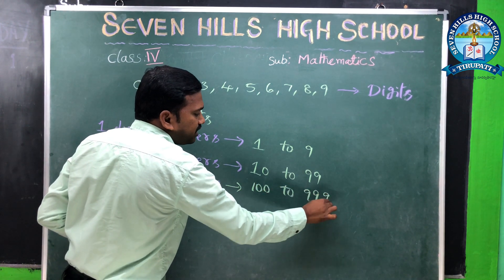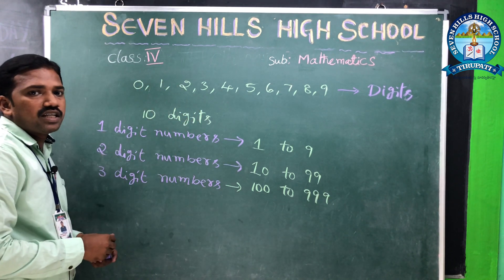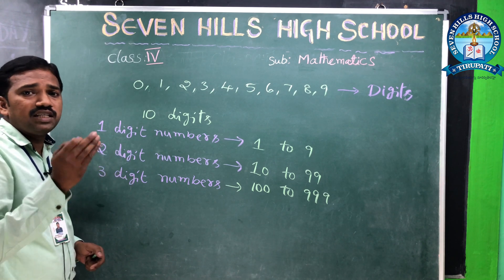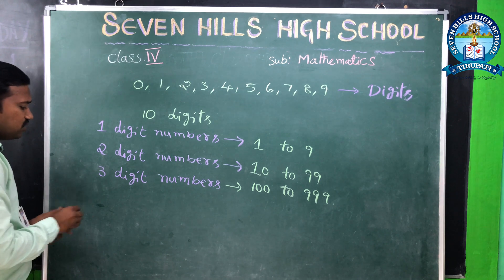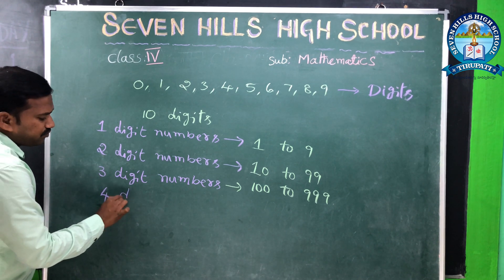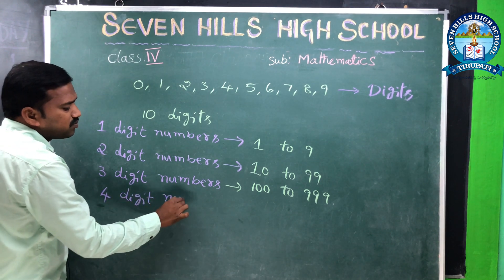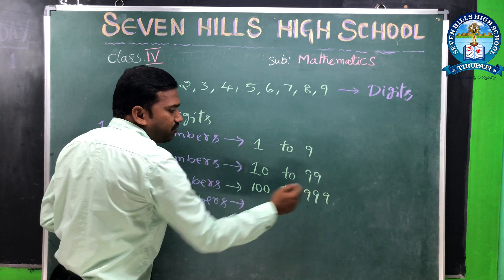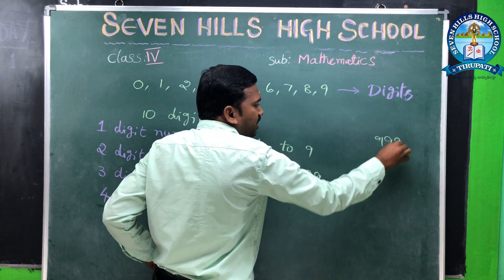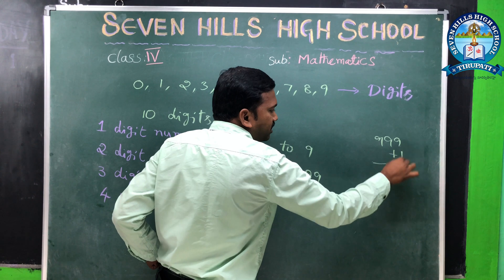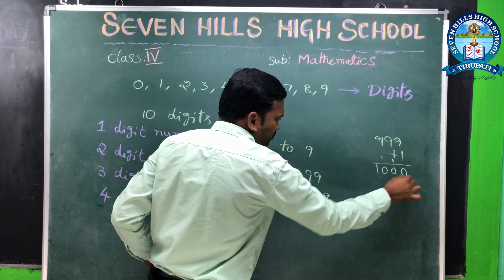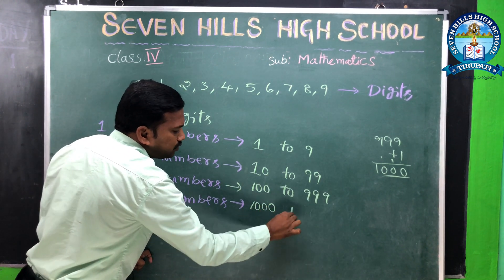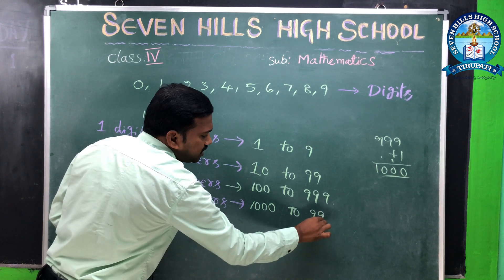Three digit numbers go from 100 up to 999. Four digit numbers start from 1000. If you add one to 999, you get 1000 — so 1000 to 9999 are four digit numbers.